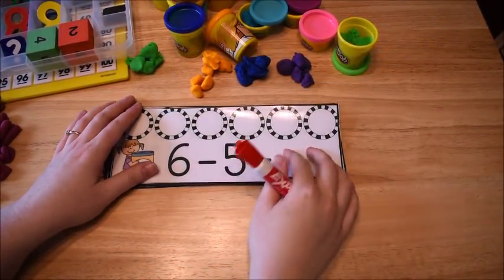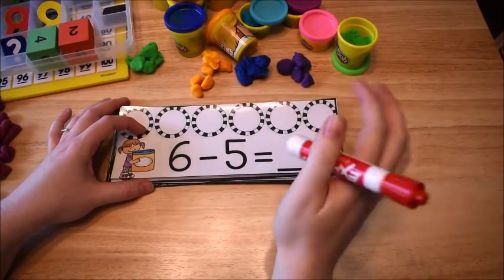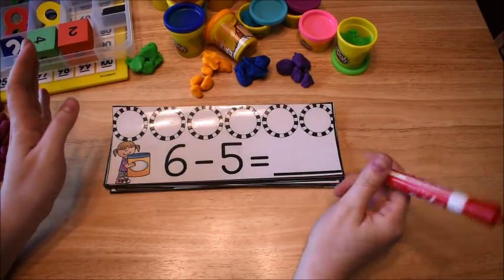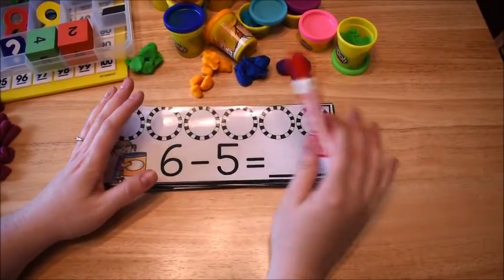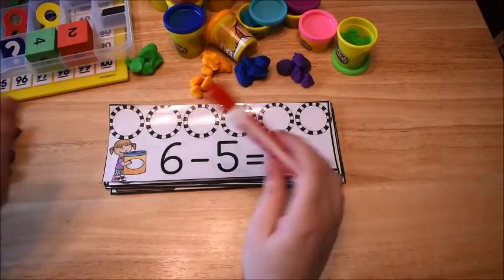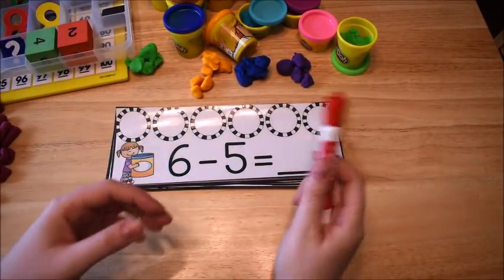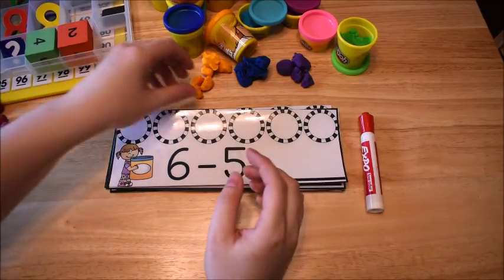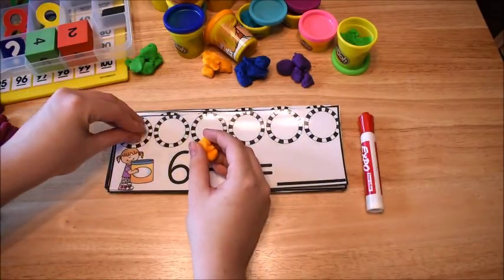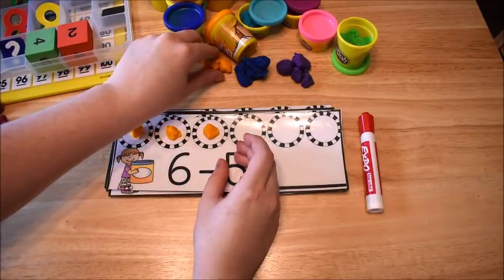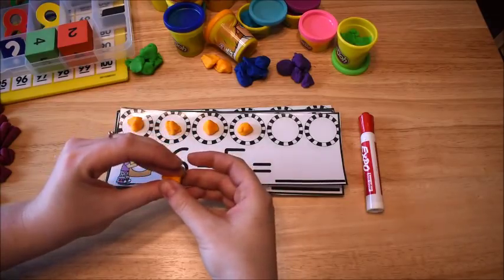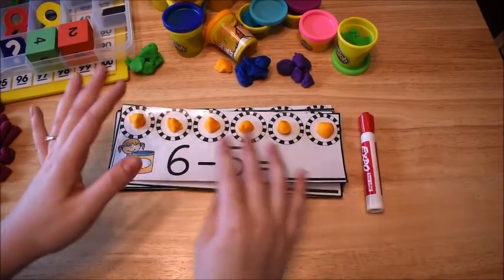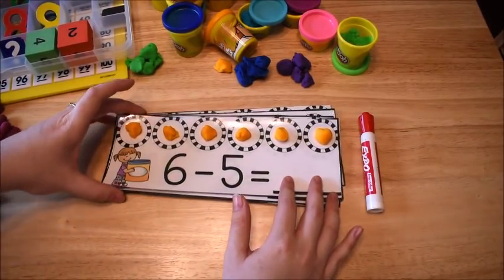Okay, the last activity I'm going to show you is a subtraction activity. This comes from the subtraction unit of my early learner's math curriculum. And this one is particularly made for using with Play-Doh. And it is called Smash It. And so what the kids do is it says six minus five. So there are six circles here. They're going to start out with six Play-Doh balls. And then they're going to subtract five, so they smash five of them.